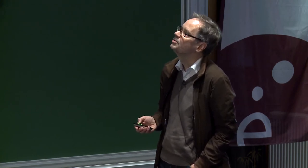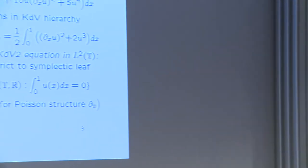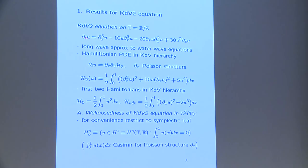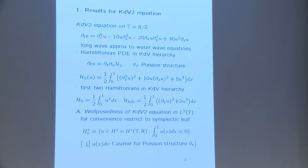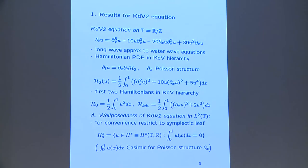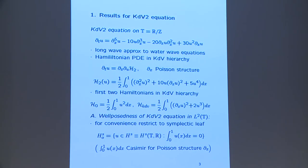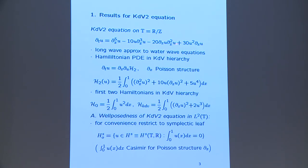Let me begin with the KdV2 equation. We consider the KdV2 equation on the circle, period 1. The KdV2 equation is a dispersive evolution equation of fifth order. It comes up in the long wave approximation of water wave equations. This specific choice of coefficients makes that this equation is actually an integrable PDE. It's a Hamiltonian PDE and the specific choice of equations makes that it's actually in the KdV hierarchy.